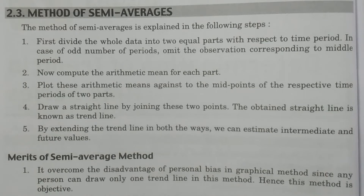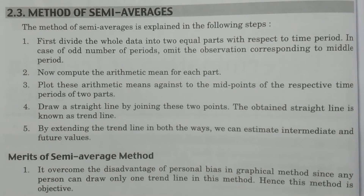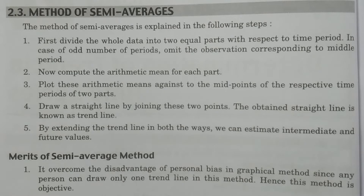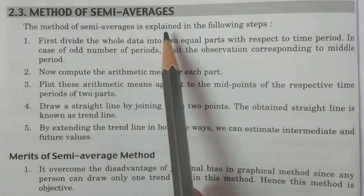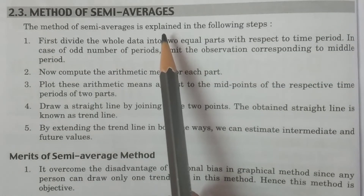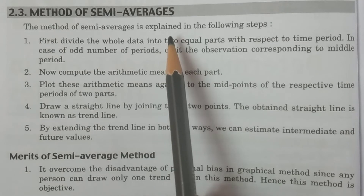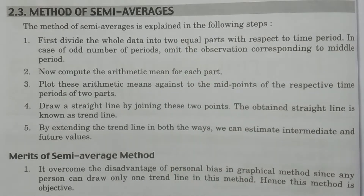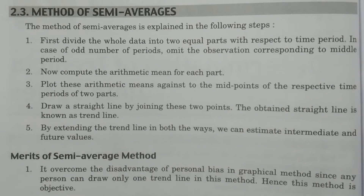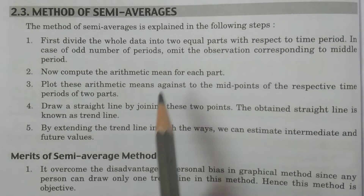Welcome to B.Sc. Statistics students. In this lesson I explain the method of semi-averages. This is one of the methods to obtain long-term fluctuations, that is secular trend or trend. This is a very simple method.